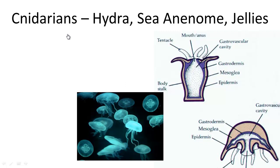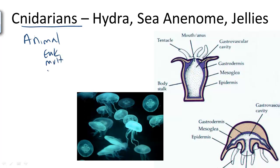Cnidarians belong to the animal kingdom, so they are therefore eukaryotic organisms. They are multicellular and they are heterotrophic. Some examples of Cnidarians include hydra, sea anemones, and jellyfish, or jellies.